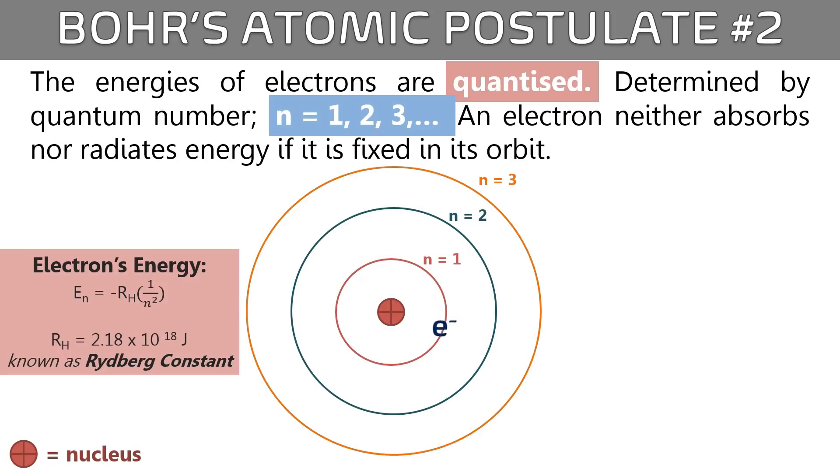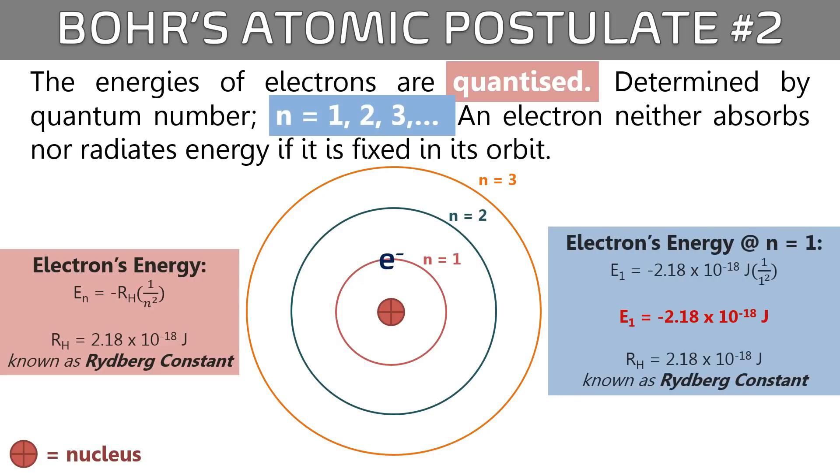Now, let's try to calculate the energy of the electron on your screen. This electron is situated at N equals to 1. Can you do it? You're absolutely right! This is the energy of the electron when it is located at N equals to 1.